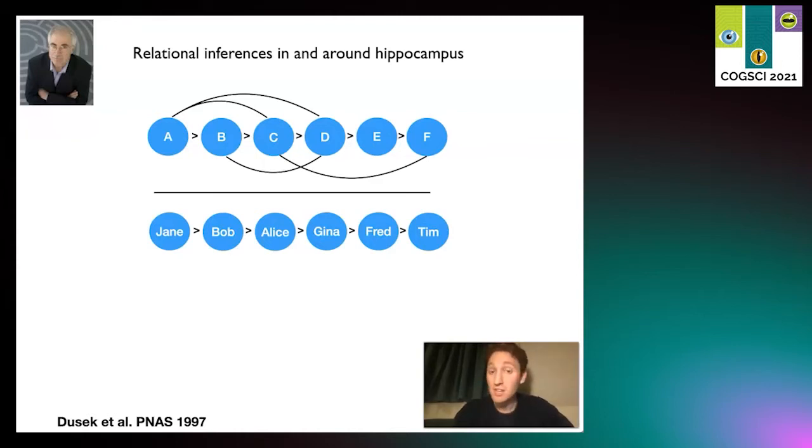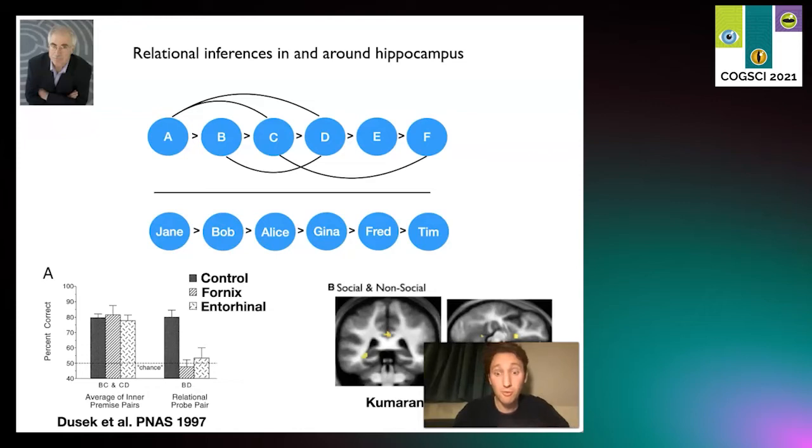then if I asked you what is better, B or E, even if you've never seen it before, you'll say you'd rather have B because you're able to chain together all these pairs of information. Similarly, if Jane is stronger than Bob and Bob is stronger than Alice, it implies Bob is stronger than Fred. Eichenbaum showed that the hippocampal formation was crucially important in making these inferences you've never seen before.